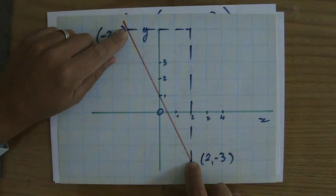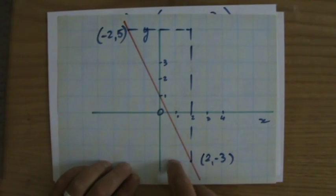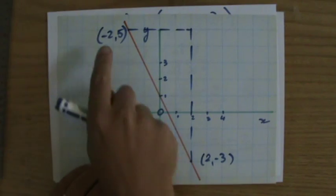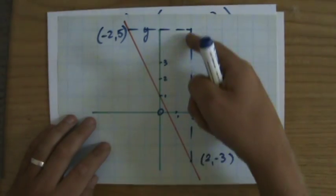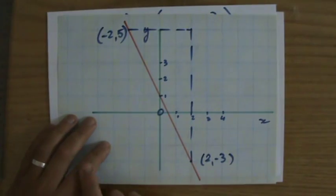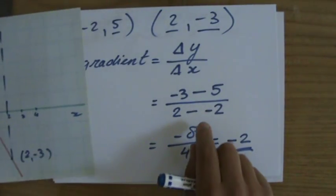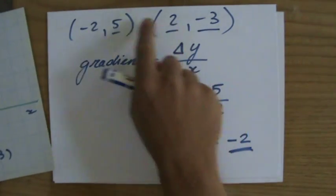I found two coordinates. Yeah, nicely positioned on the intersection of some of those squares, where I can really read easily. It's two, minus three. Yeah, minus two and five. And I'm going to take the difference in the y direction divided by the difference in the x direction. Minus three minus five divided by two minus minus two. Two minus minus two. Okay, my answer is minus two.